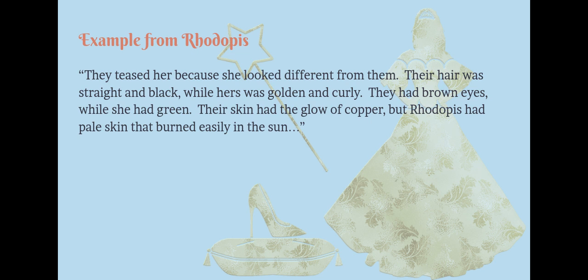I want you to look at the excerpt on the board. They teased her because she looked different from them. Their hair was straight and black while hers was golden and curly. They had brown eyes while she had green. Their skin had the glow of copper, but Rhoda P's had pale skin that burned easily in the sun.